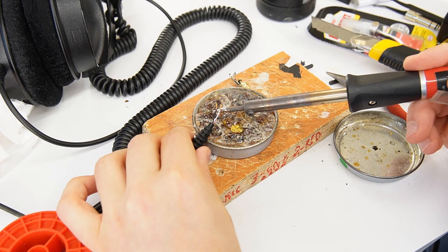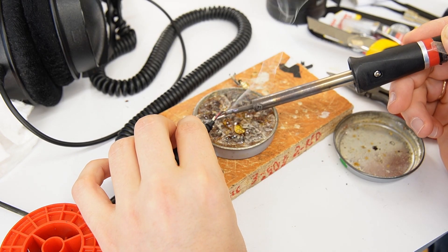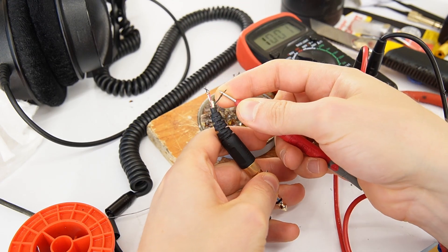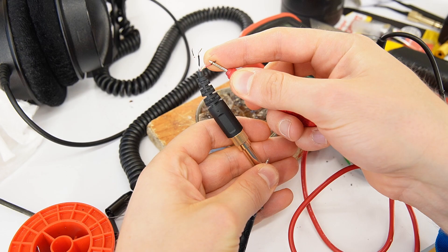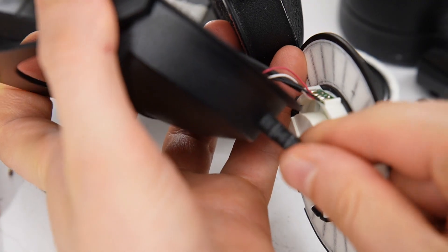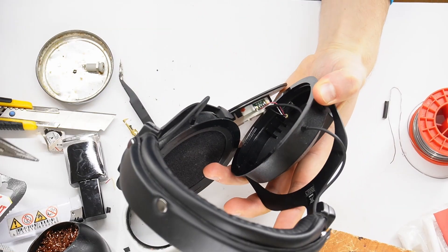Tin the wires from the broken jack so you can test them with a multimeter. Use a multimeter in resistance mode to find which wire is left, right, and ground. If you don't have the old jack or a multimeter, you can open the headphone's housing and check the wire connections inside to identify the correct colors.